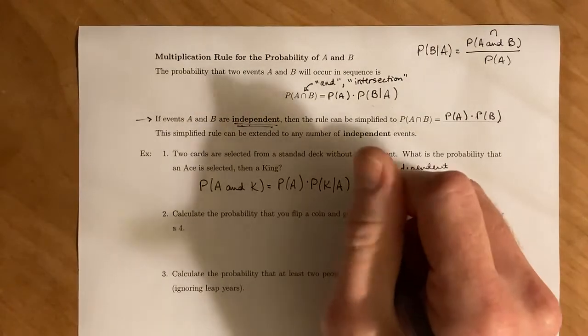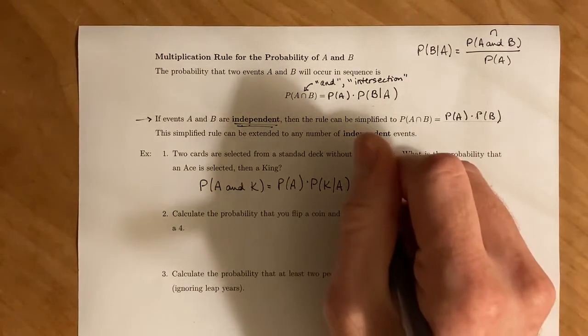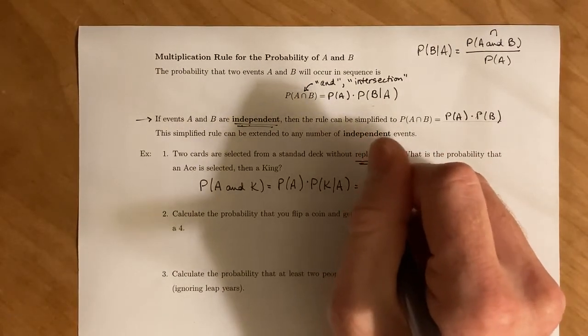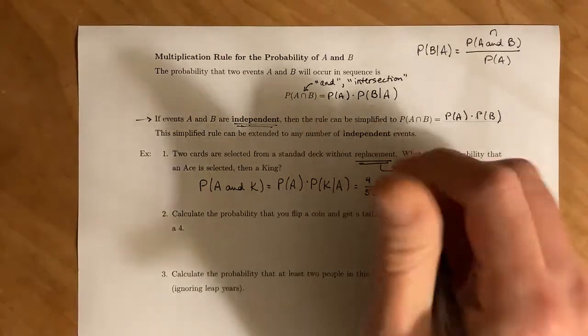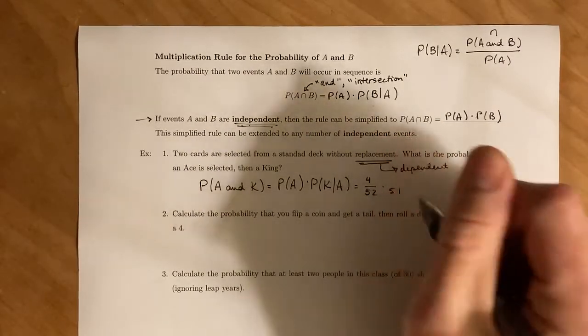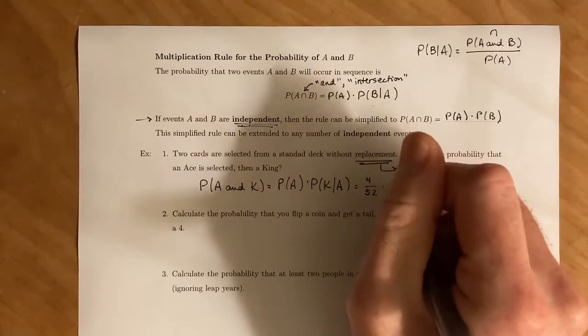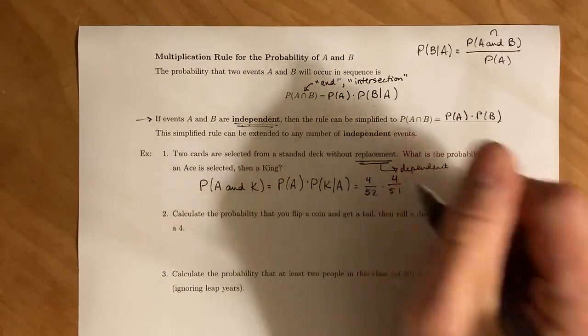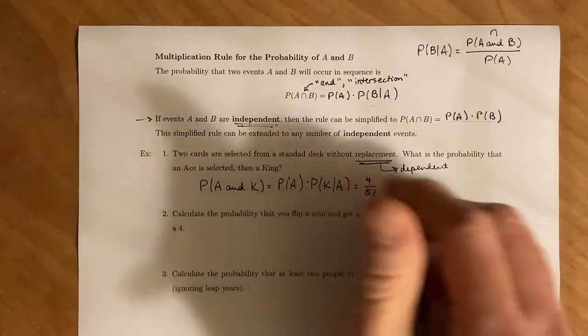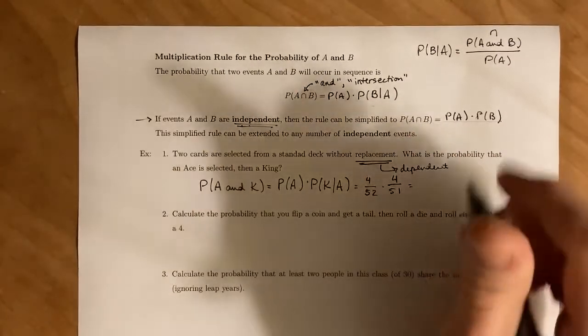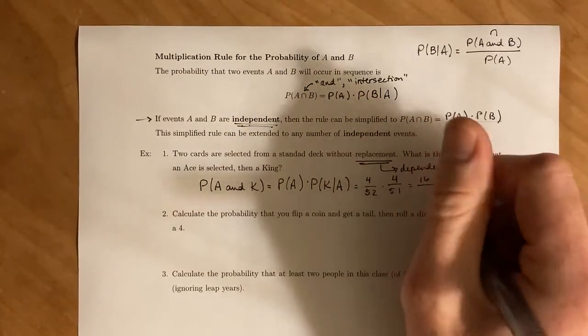So the probability of taking or selecting an ace, there's four aces in a standard deck. Once you pick out that card, you're left with only 51 cards left. And there's still four kings left over. So if you remember your multiplication for fractions, that's going to be 16 over,